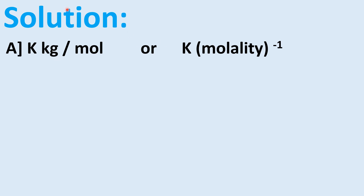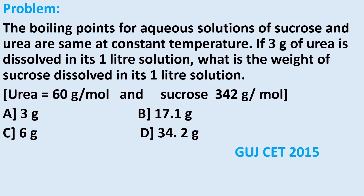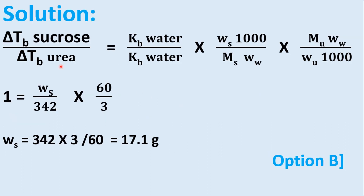The boiling points for aqueous solutions of sucrose and urea are the same at constant temperature. If 3 gram of urea is dissolved in 1 liter solution, what is the weight of sucrose dissolved in its 1 liter solution? Molar mass of urea is 60 g/mol and sucrose is 342 g/mol. Options: A) 3 g, B) 17.1 g, C) 6 g, D) 34.2 g.